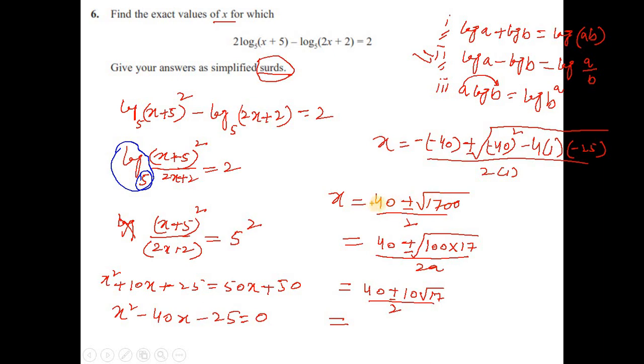First, if you see that you have 40 here plus minus 10, now I can take 2 common. So 2 common, then we have [2(20 ± 5√17)] / 2.